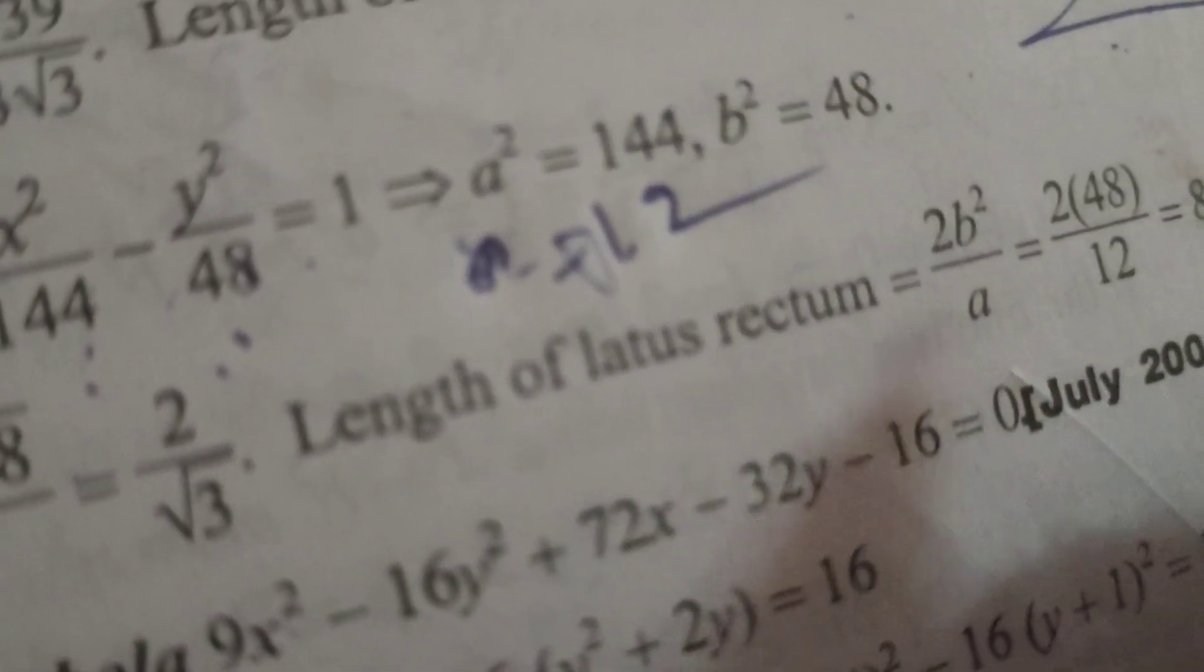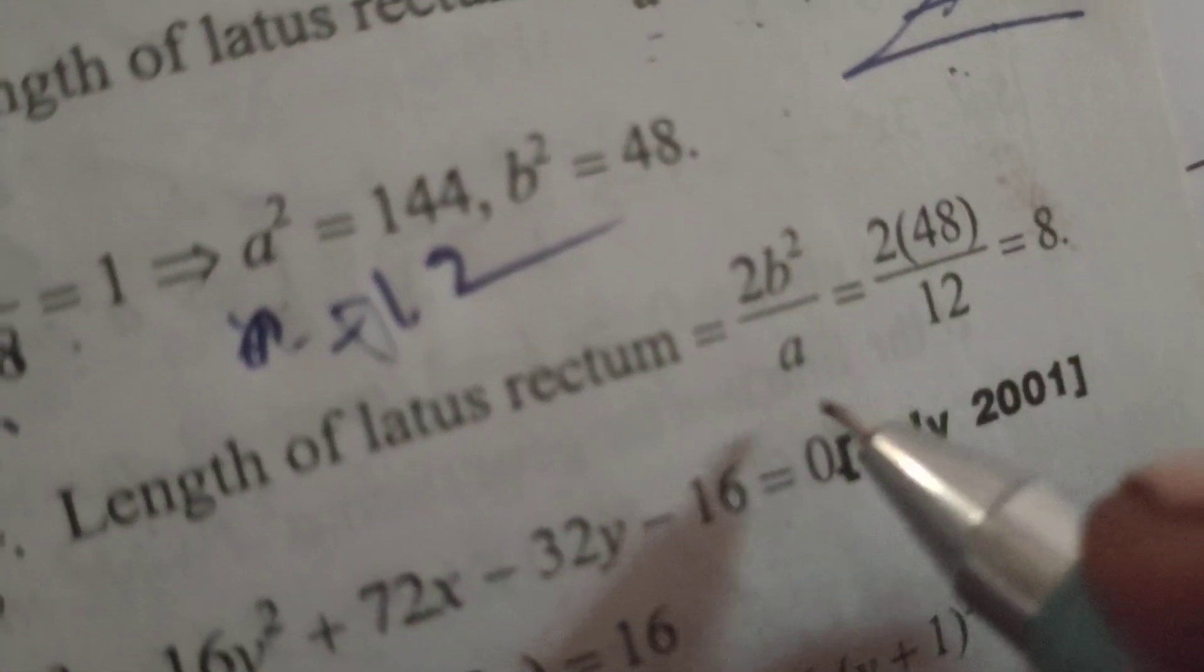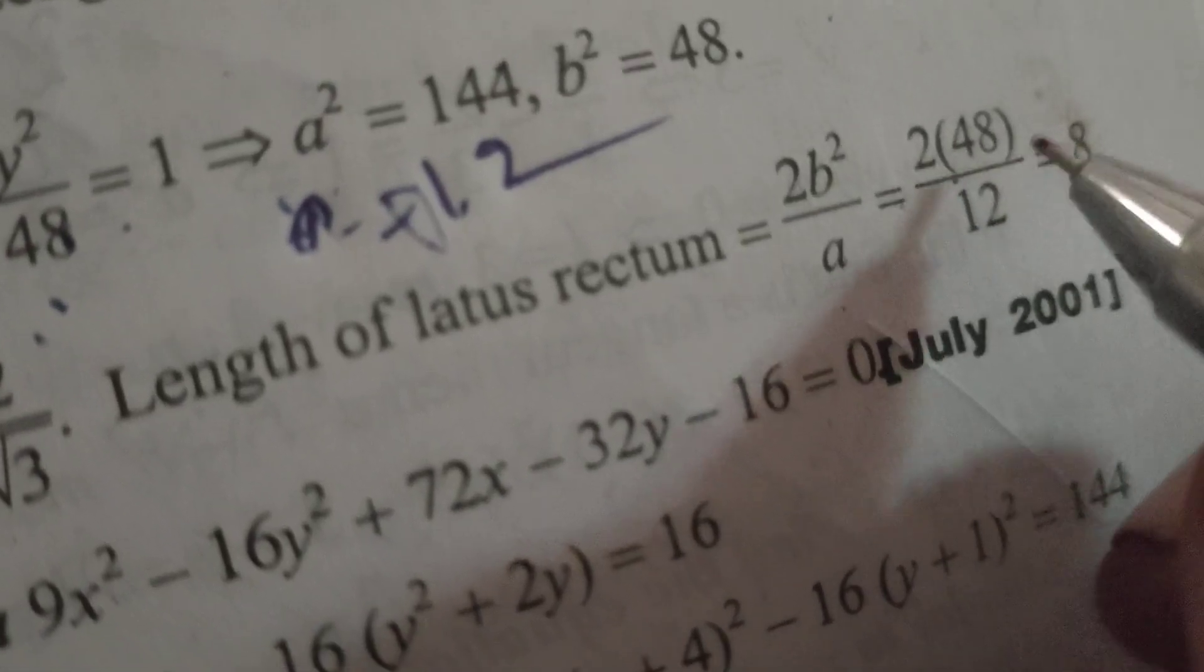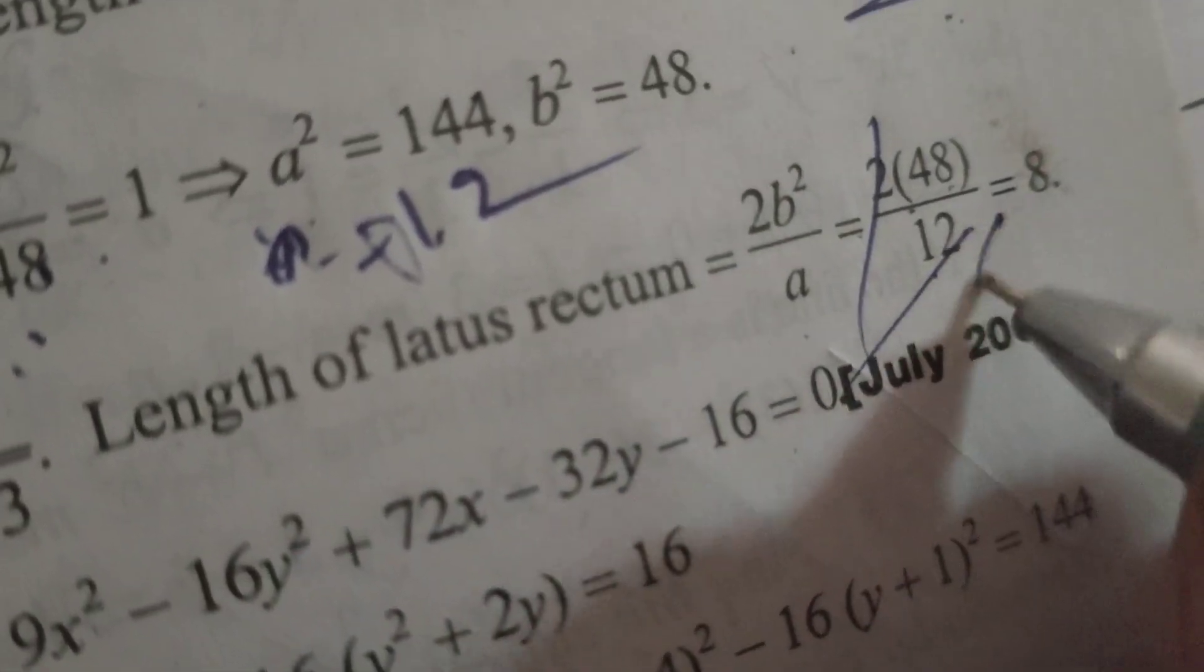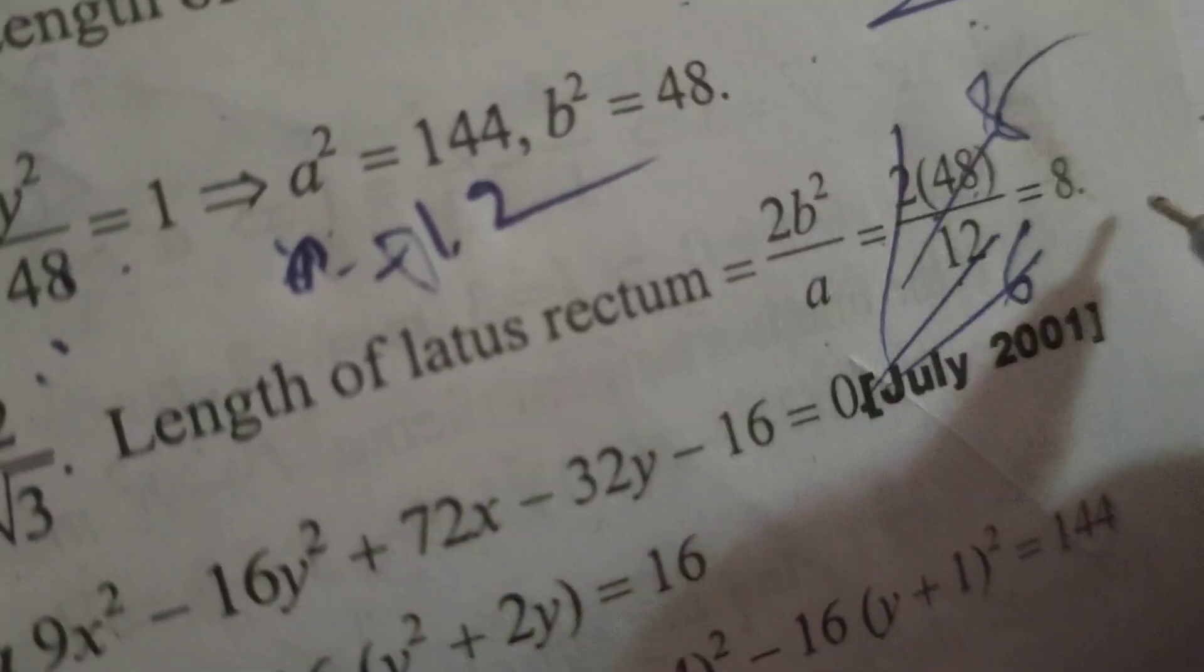Length of latus rectum formula is 2b²/a. That's 2 × 48/12. After cancellation we get 8.